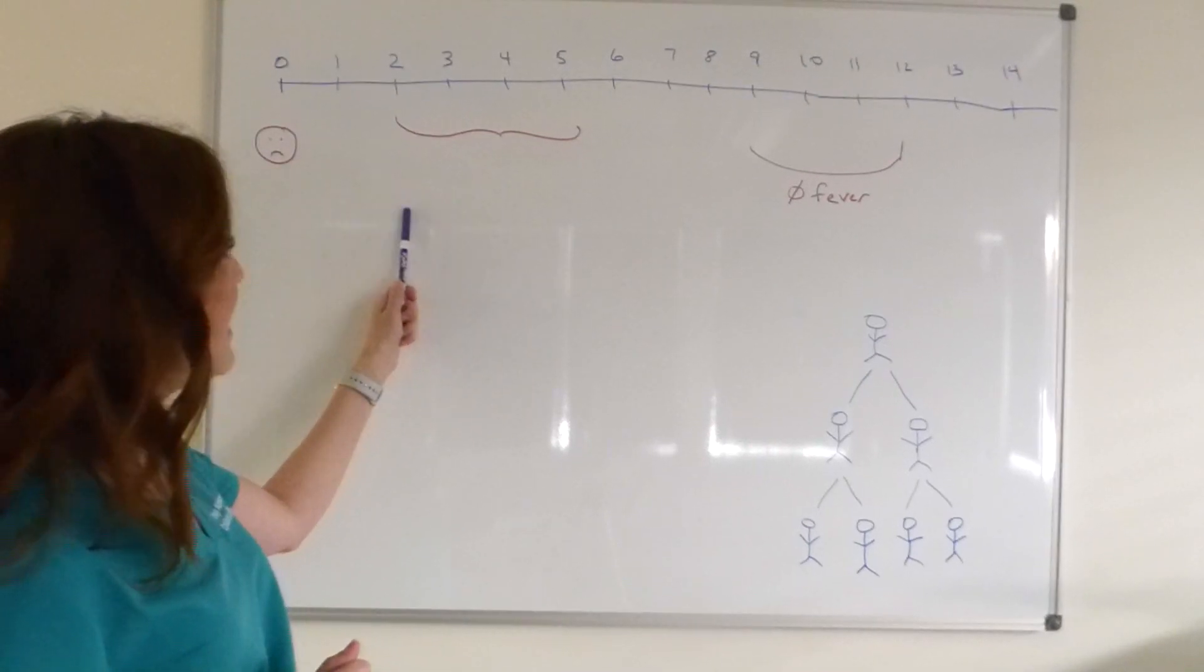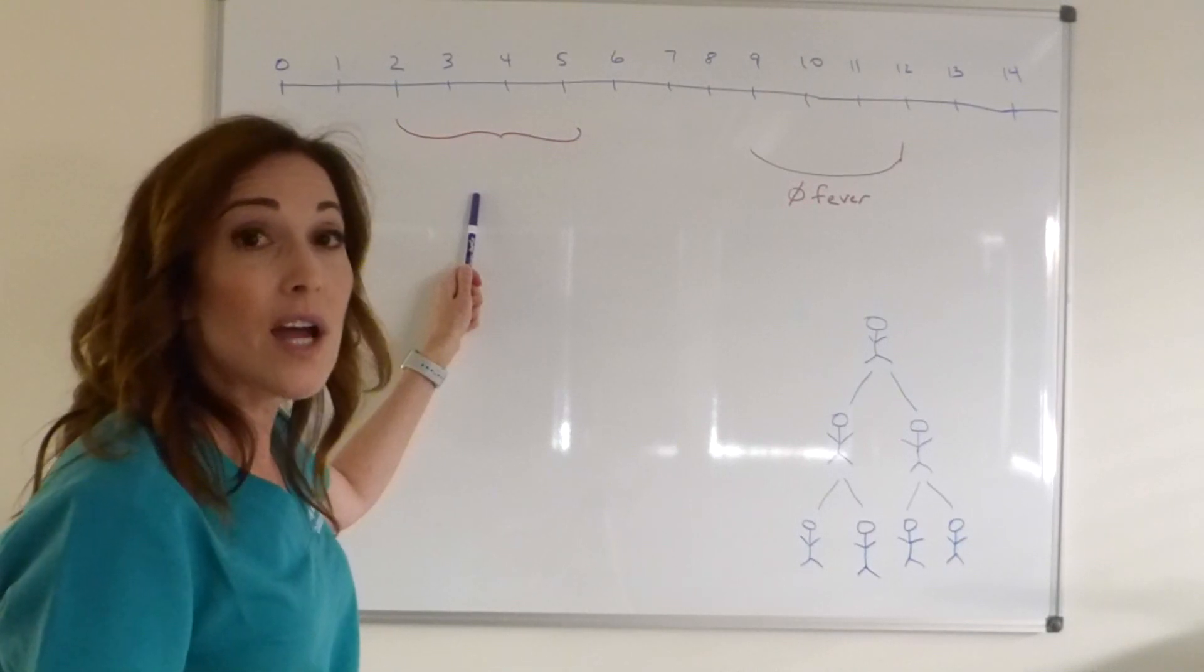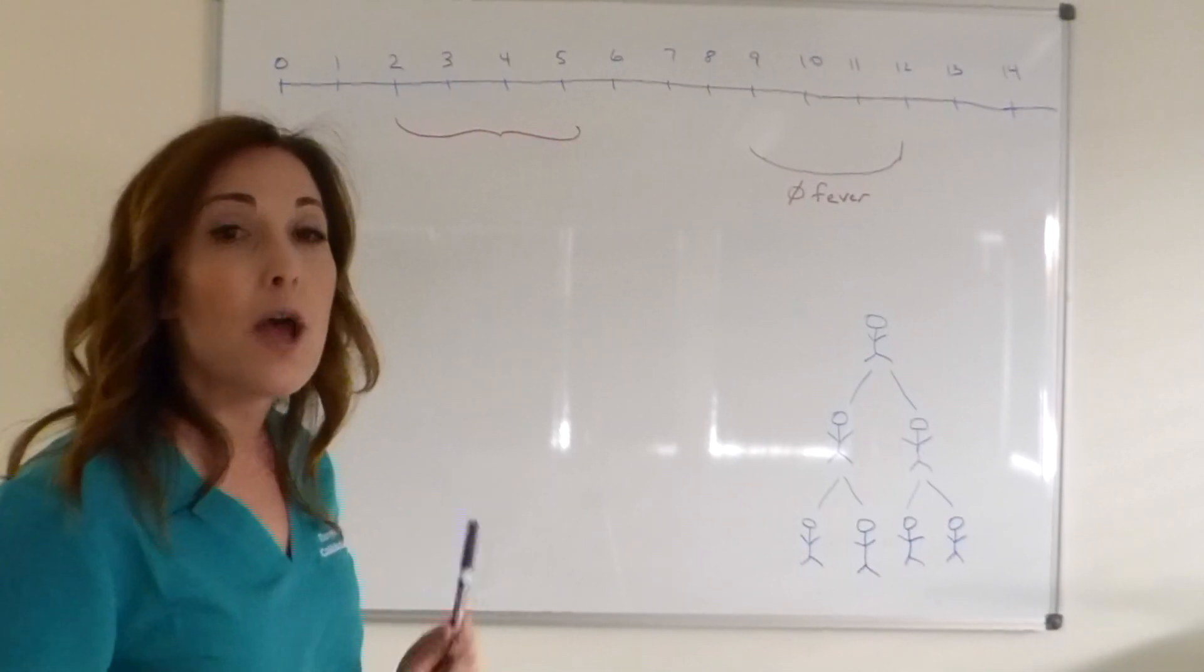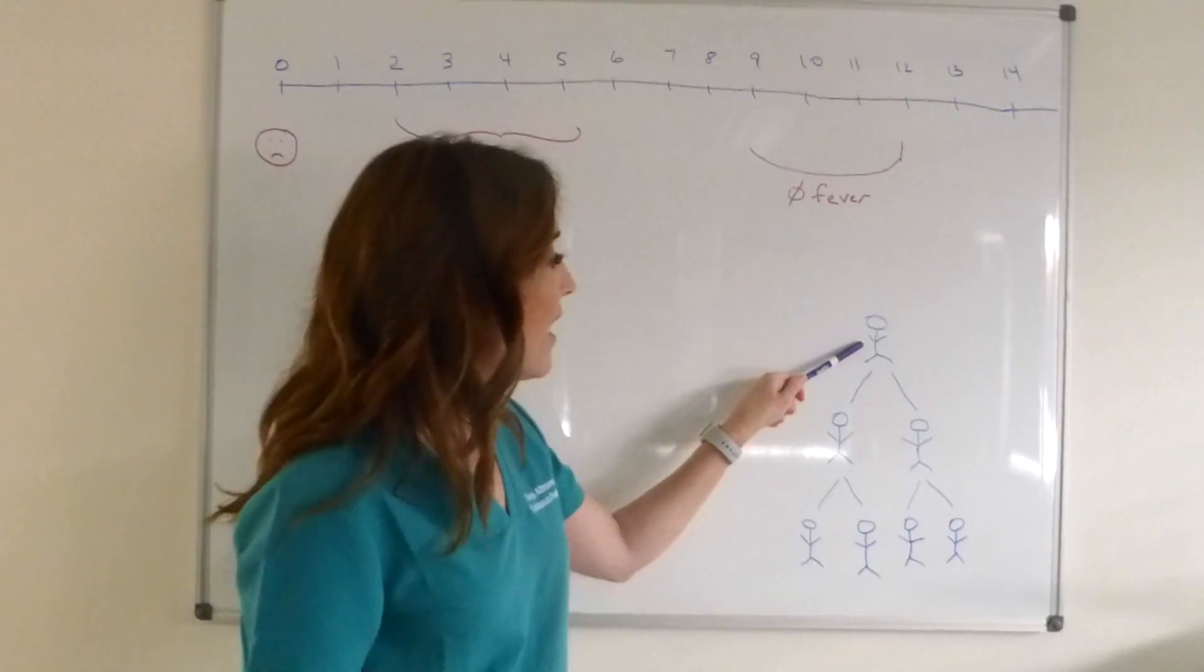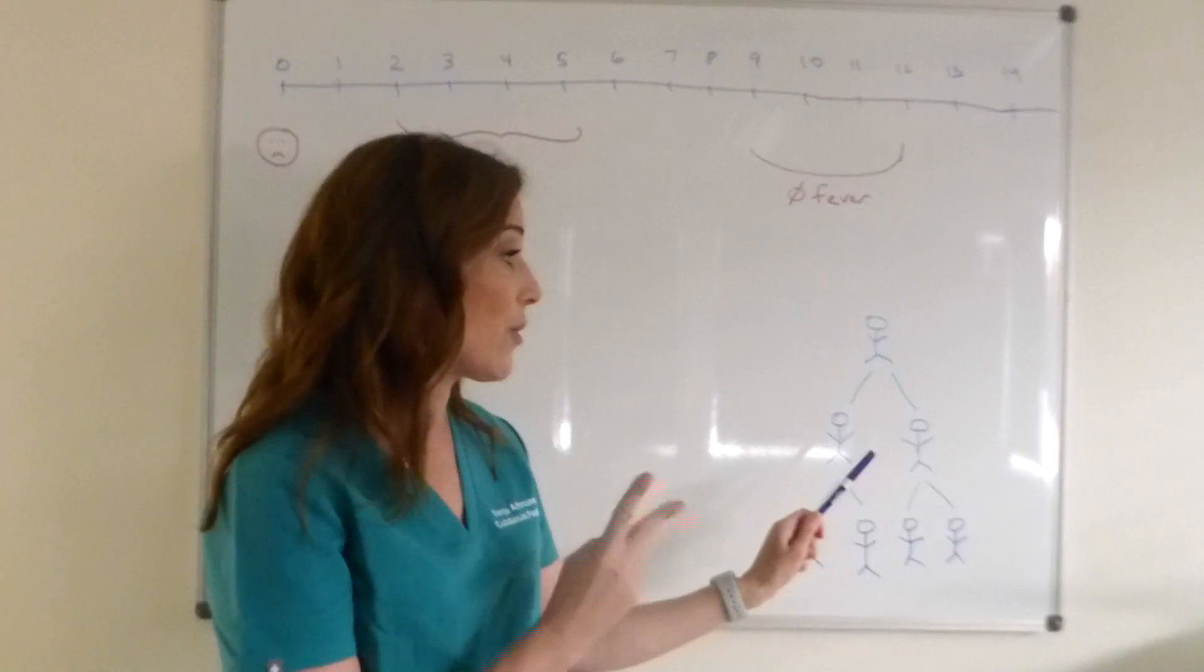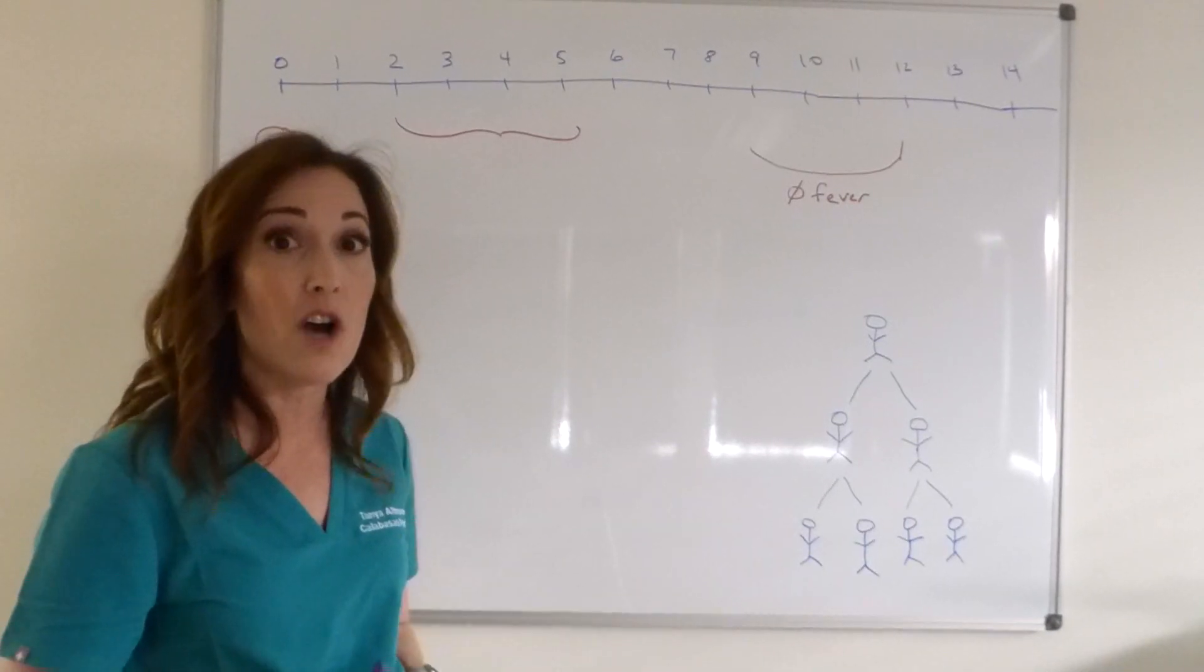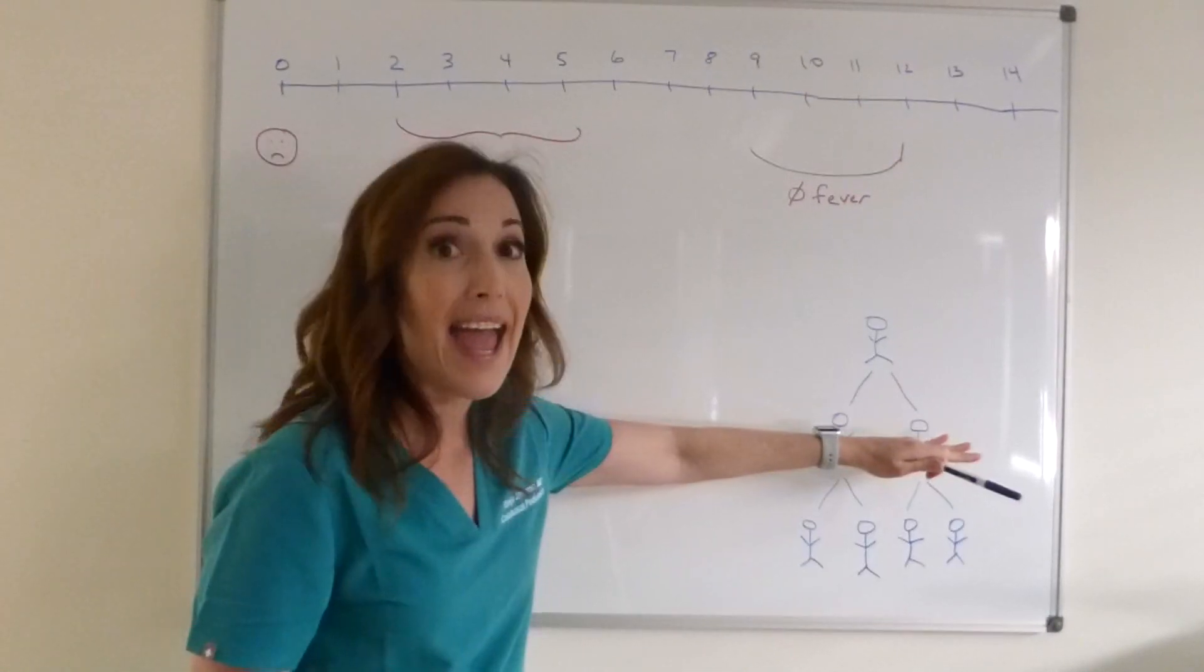So Henry goes to the pediatrician's office on day two, gets tested, and it comes back positive on day three. So now the school knows for sure, yes, Henry does have COVID-19. And it's a good thing they notified all of those friends, because if they hadn't, this is what happens. Henry can transmit it to two friends, it's really two or three, but for simplification here we're going to go with two. Each one of those friends can then transmit it to two or three more friends and on and on. And that's why it's really important to be able to contact trace and stop the spread.